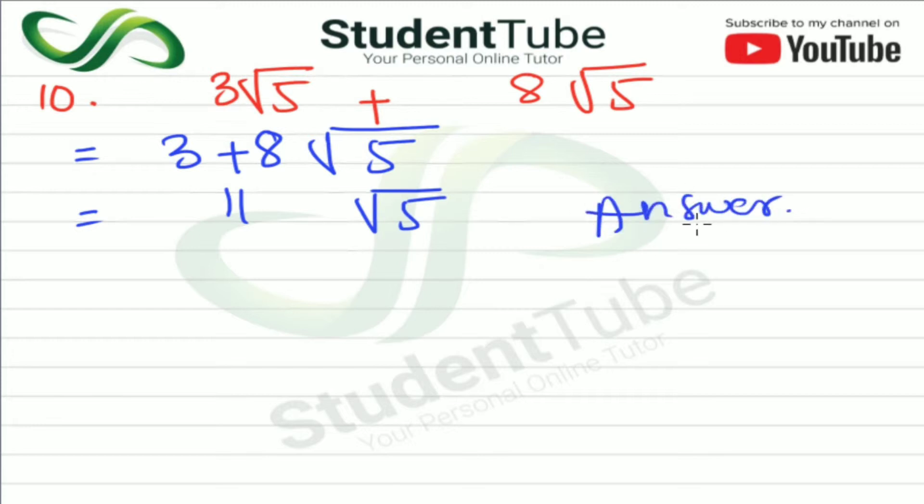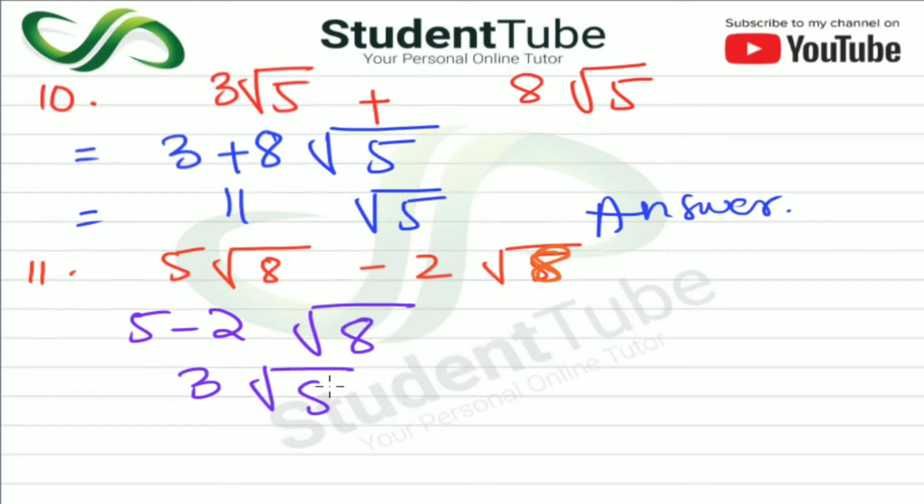After this, question number 11 is 5 under root 8 minus 2 under root 8. Now earlier we had to add plus, now we have to do minus. So here again, sorry, here it's not 5, it's 8, okay, this is 8. Now when we solve here, 5 minus 2 will become, and 8 will come common. 5 minus 2 is 3, so this is 3 under root 8, our answer.